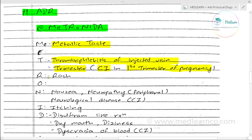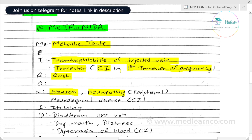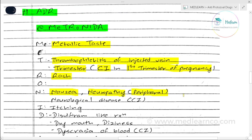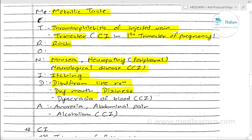R stands for rashes. O stands for another side effect. N stands for nausea or peripheral neuropathy. Neurological disease is a contraindication. I and D: disulfiram-like reaction with alcohol. D also stands for dizziness and dry mouth. Blood dyscrasia is also contraindicated.